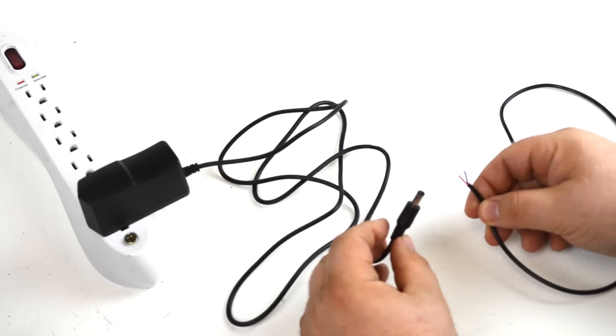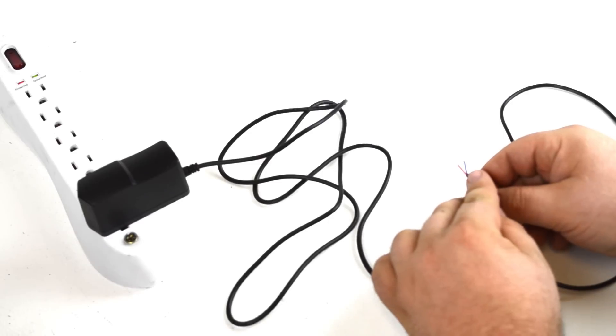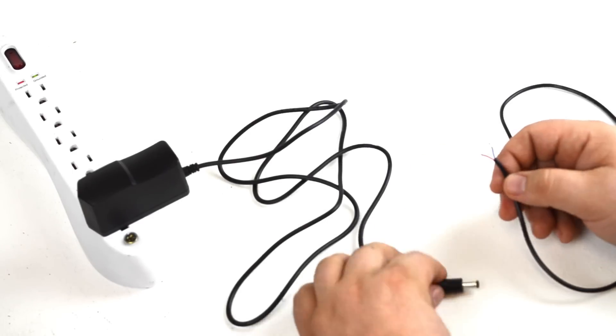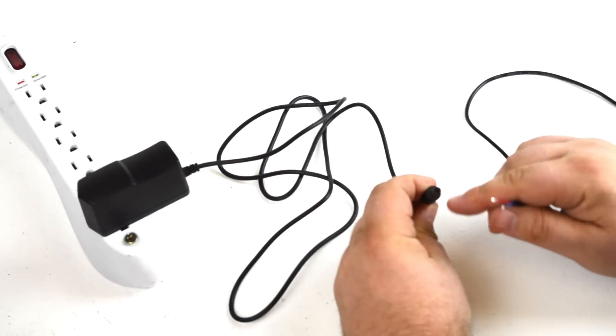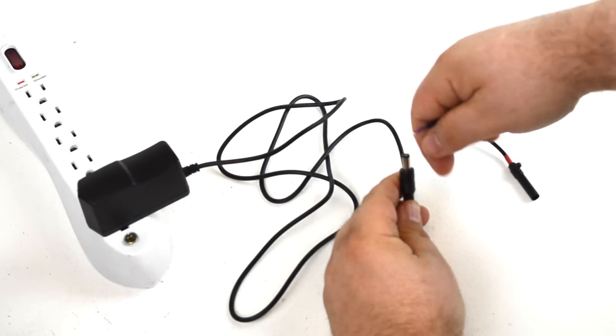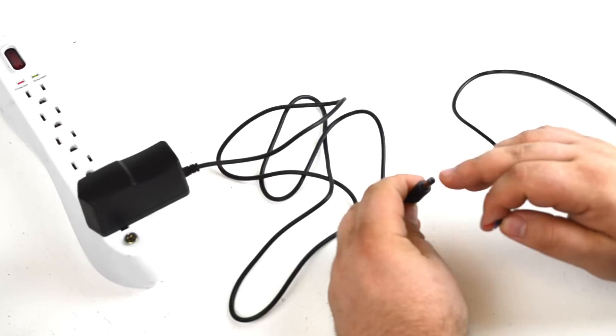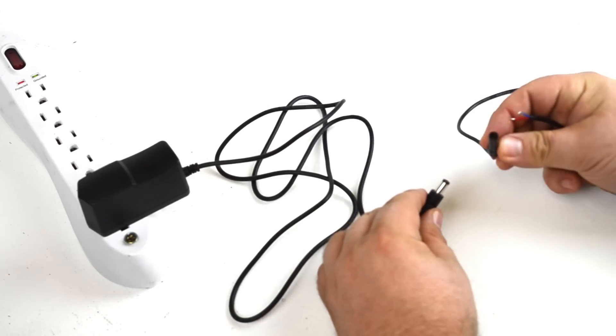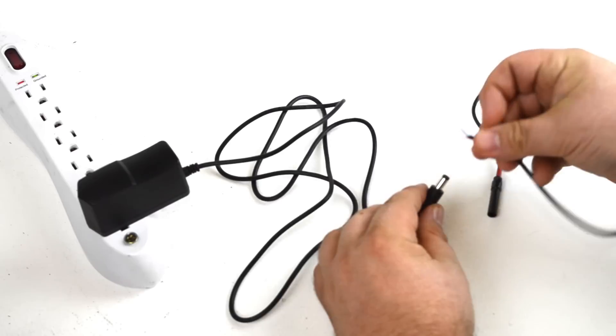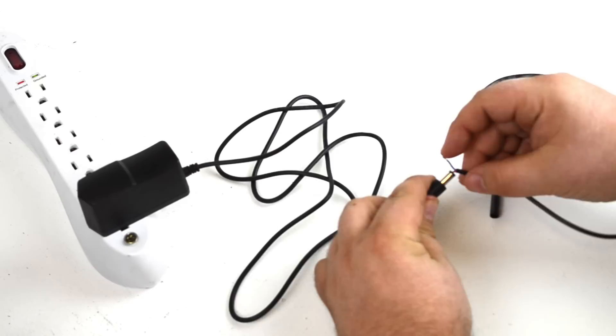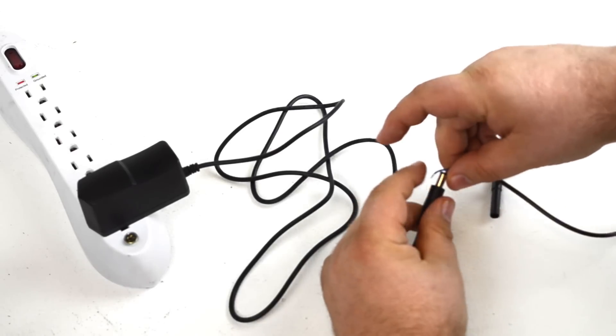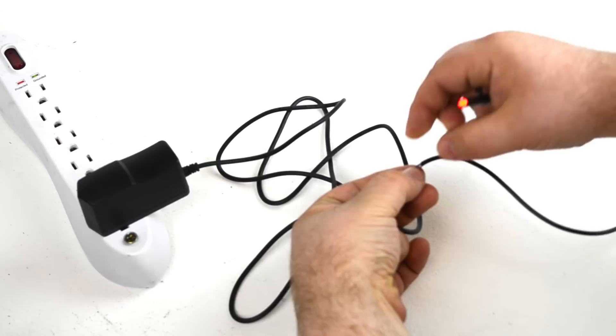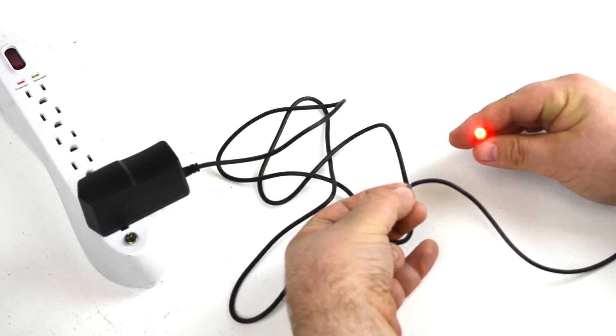You'll notice that at least on this nano spot we have two wires, a red and a blue. We're going to go ahead and make the assumption that red is positive and blue is negative. You'll notice that this barrel plug has a circle in the middle and metal around the outside. The middle is positive. The outside is ground or negative. So if you wanted to just test the nano spot you could put the red wire inside the barrel plug and then touch the blue wire to the outside. And you'll see that when we get both wires to connect the nano spot comes on. So we know it's working.